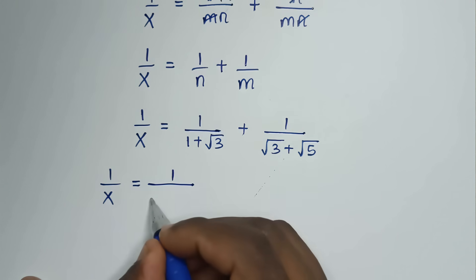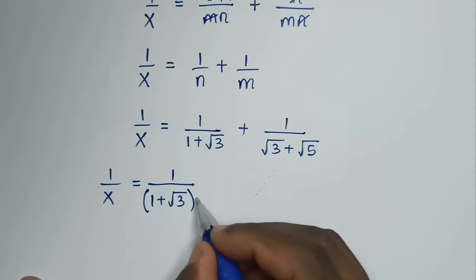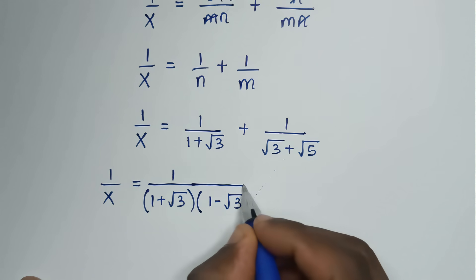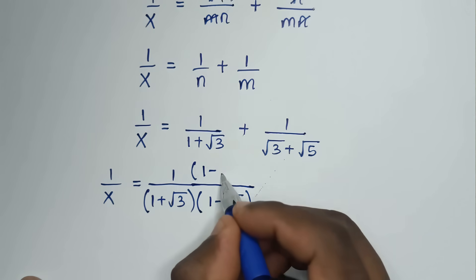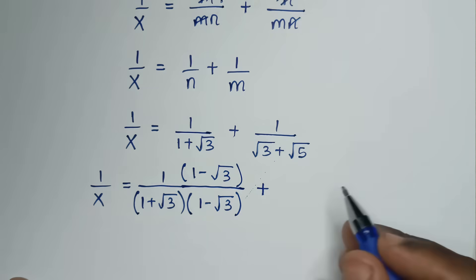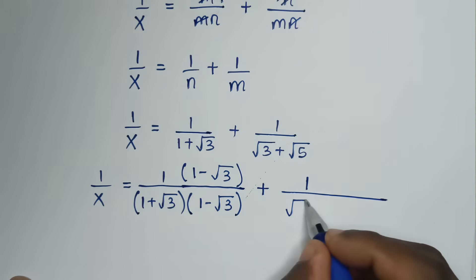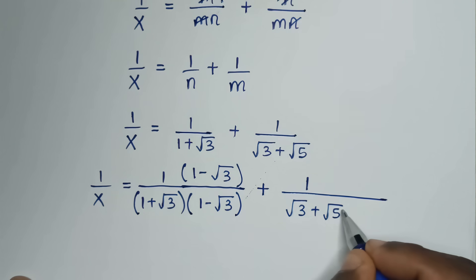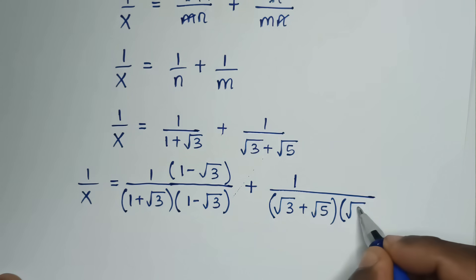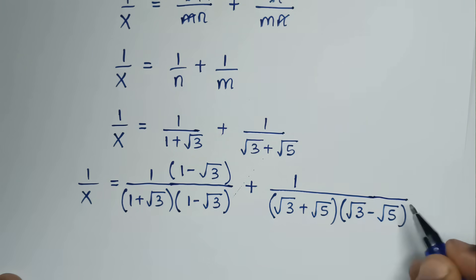We take the reciprocal of x. So 1 over x equals 1 over n plus 1 over m, which is 1 over 1 plus square root of 3. To rationalize this denominator, we multiply by 1 minus square root of 3 in both numerator and denominator, and also 1 over square root of 3 plus square root of 5 multiplied by square root of 3 minus square root of 5.